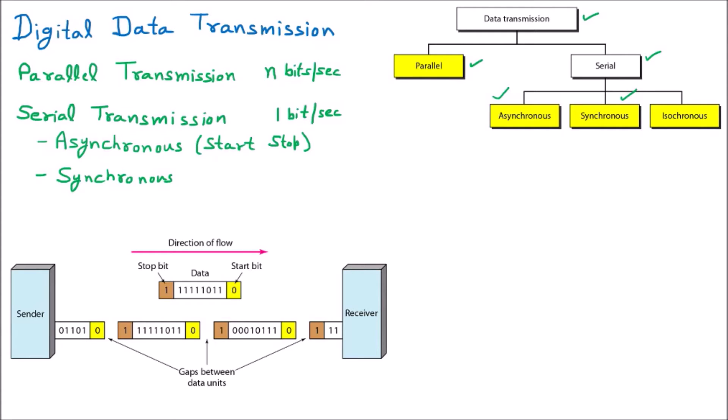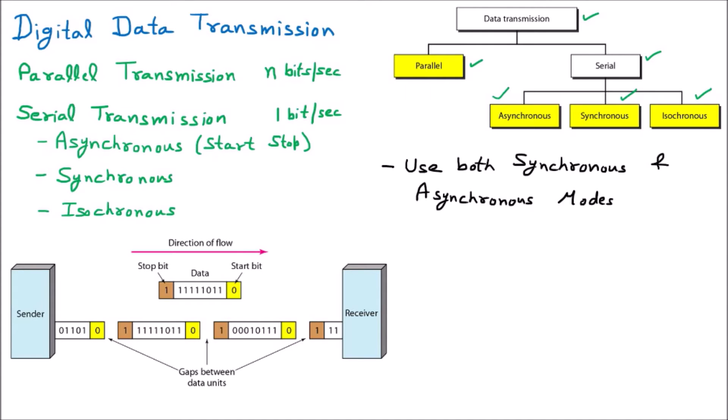So the next type we are discussing, which helps with real-time audio and video, is isochronous. Isochronous merges the best features of asynchronous and synchronous — it uses both technologies and methods. In synchronous, timing is important; in asynchronous, timing is not important. In synchronous, speed is very high, but in isochronous, speed is slightly less than synchronous.